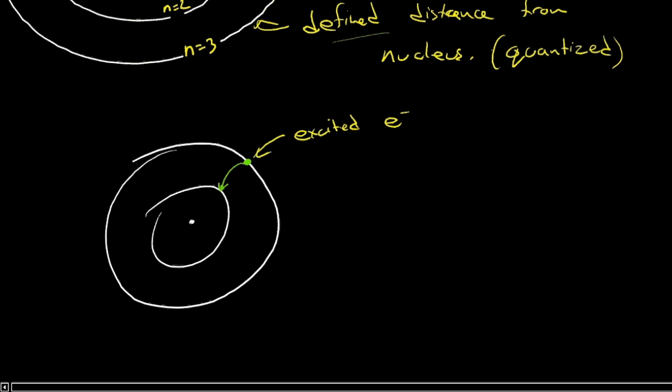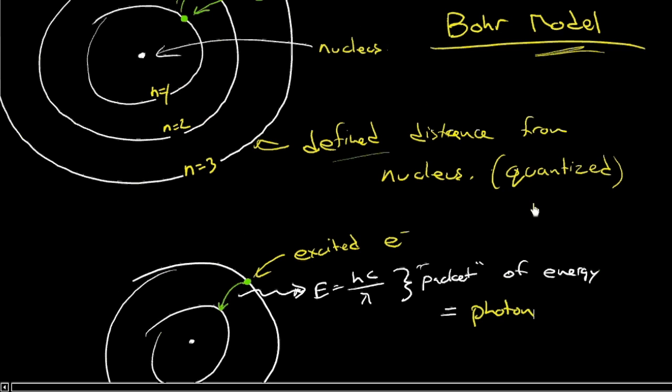Letter grades, A, B, C, D, are quantized, whereas percentage is more continuous. So if this excited electron drops back down, it gives off energy. And because it's quantized, it's a little packet of energy, if you will. It's a packet. It's like a specific quantity of energy. We call that a photon.